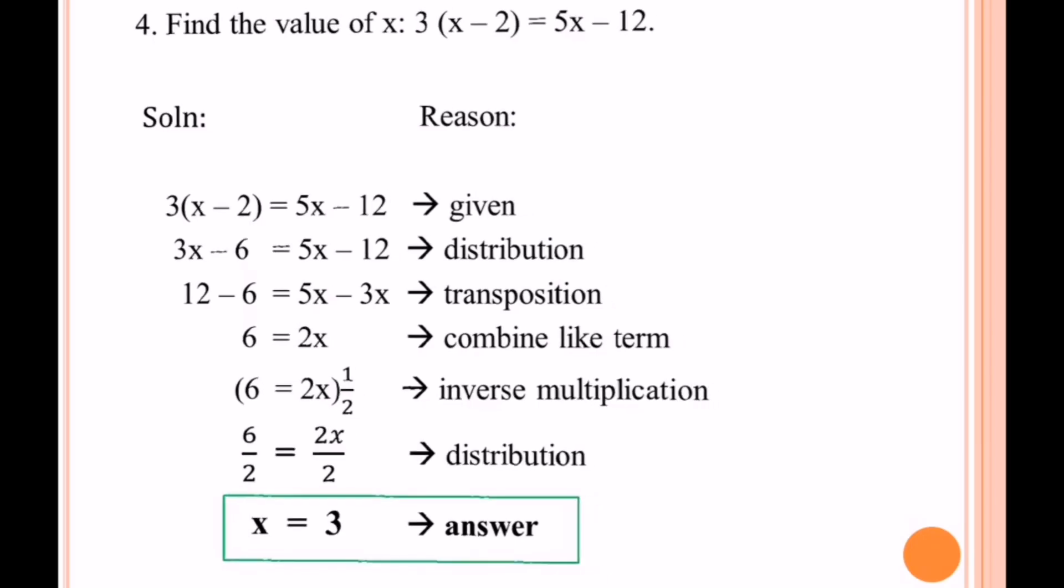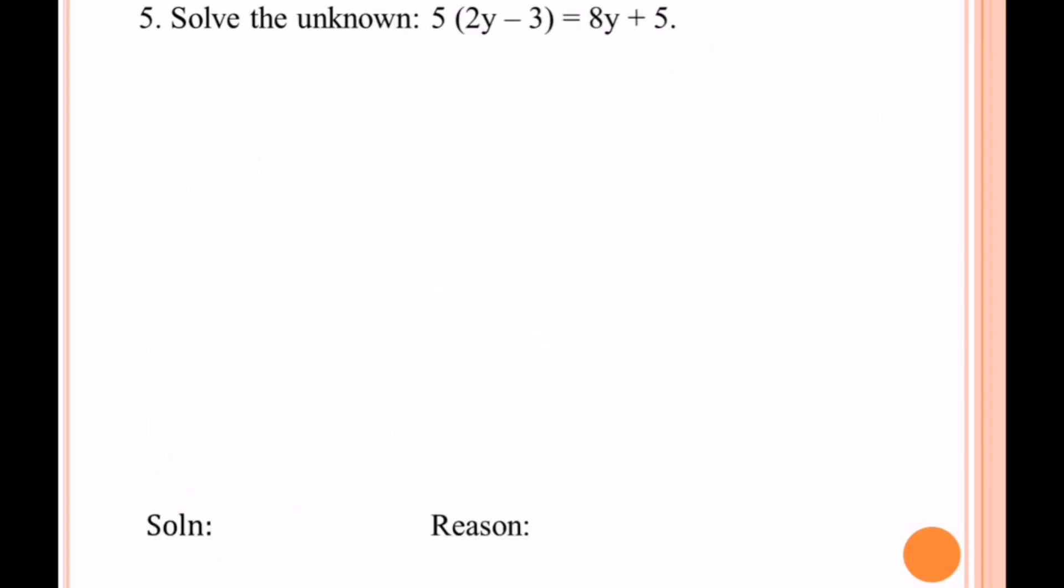Let us have another example about finding the value of an unknown. We have here: 5 times (2y minus 3) equals 8y plus 5. Same process: bring down the given, then multiply 5 to the term inside the parentheses. We have 10y minus 15 equals 8y plus 5 by distribution.